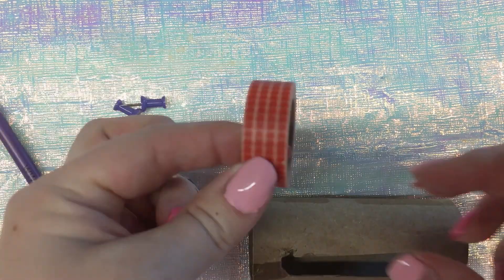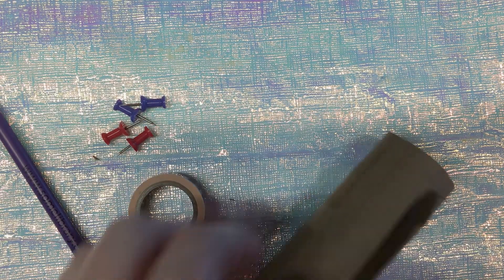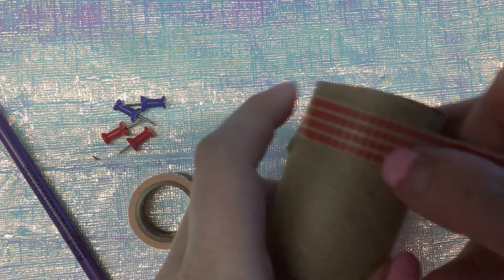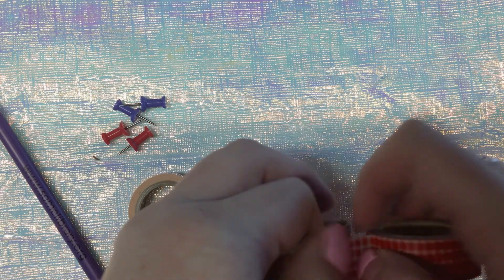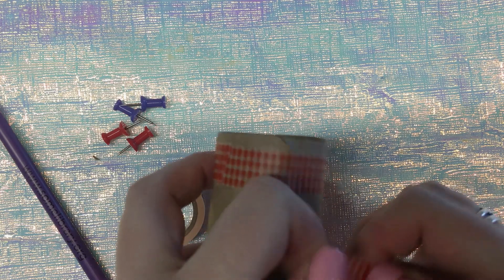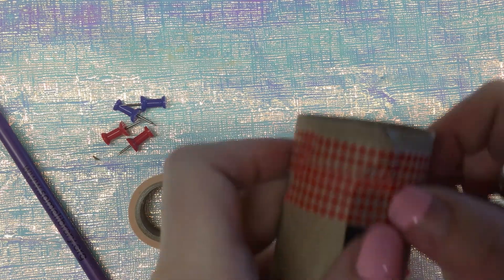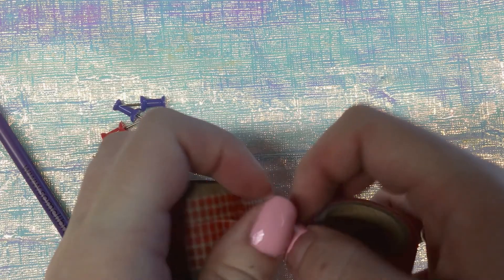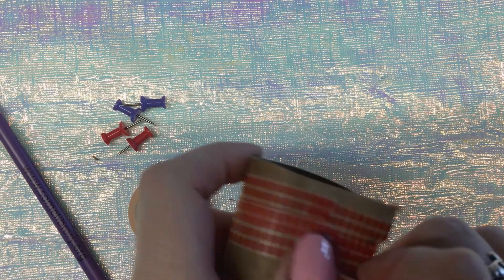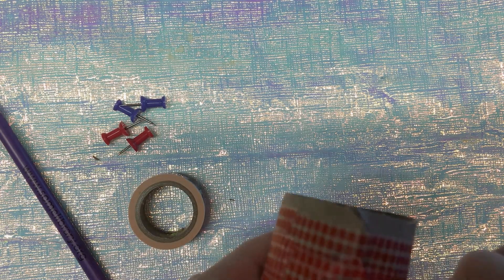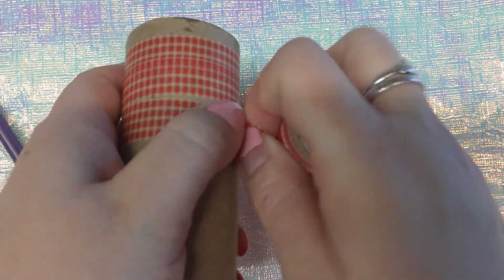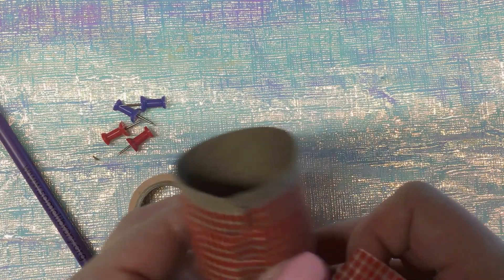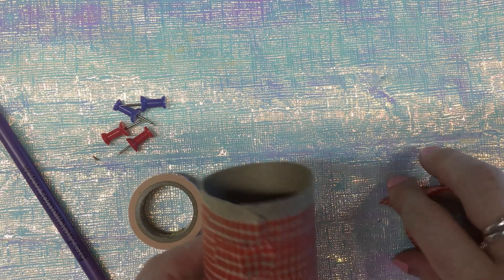You will take your tape and then start taping all the way around the toilet paper roll, even over the hole you just cut out. You want to cover that up. The whole thing. Now pretend like this is all covered. When you finish that, you are going to draw a line down the middle.